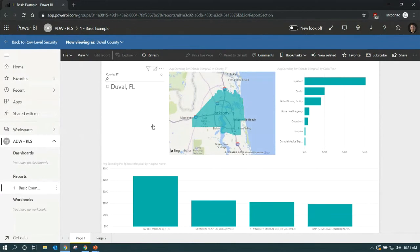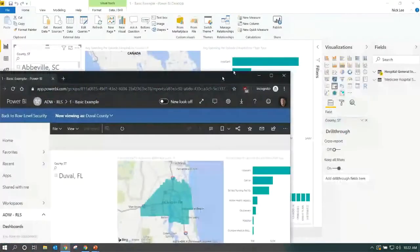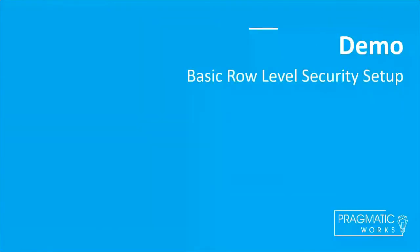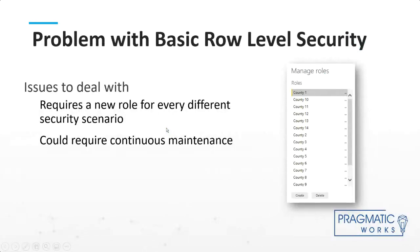The most basic version of row-level security works but has a scalability problem. If you assign people to each individual region, county, or demographic, you'll end up with a huge number of roles. This requires continuous maintenance — if someone changes roles in your company, like moving from the Northeast to Central United States, you'd have to manually update their role assignment. That's too difficult to micromanage.